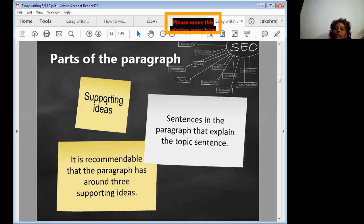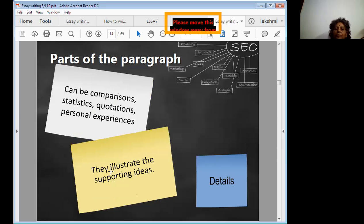Now you see the parts of the paragraph. How many parts are there? Supporting ideas after the topic sentence. The most important one is supporting ideas. Sentences in the paragraph explain the topic sentence. It is recommendable the paragraph has around three supporting ideas. You must write at least three supporting ideas, then only your essay can get better.